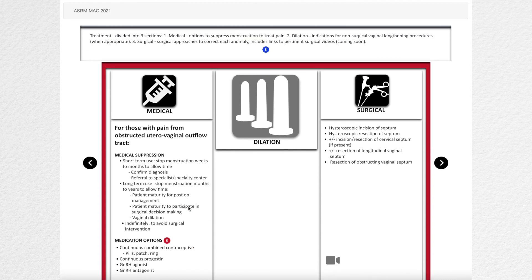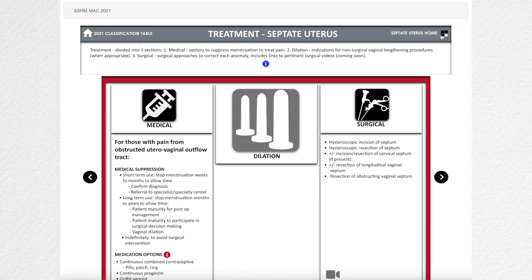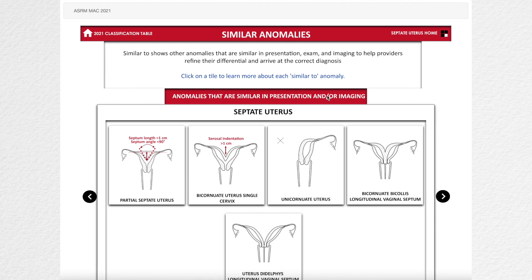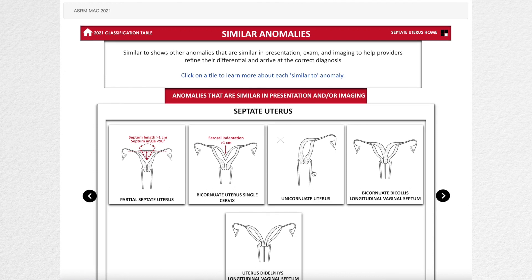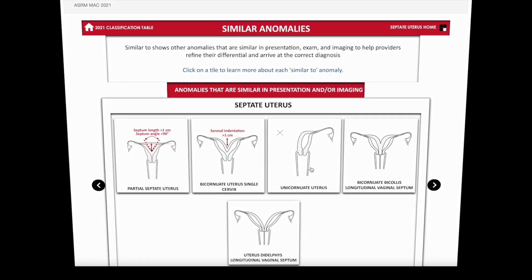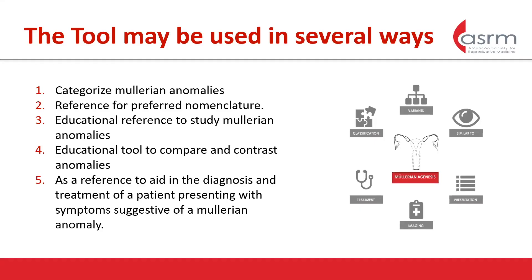It's a really important tool to educate people on the presence of Müllerian anomalies — a lot of people have never seen a complete septate uterus. It's really important to be aware of these different anomalies. The tool also helps to contrast different anomalies and refine a diagnosis, and all of this is geared towards improving patient care.